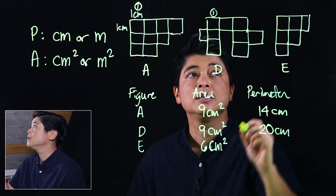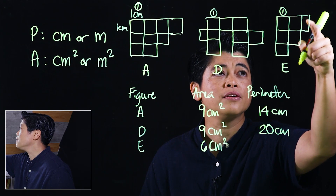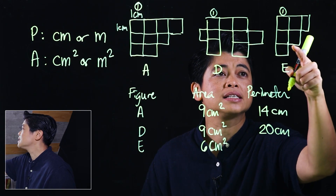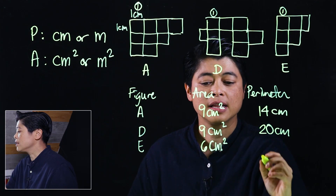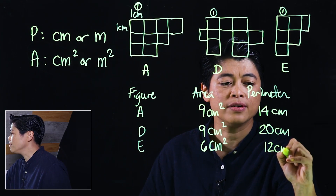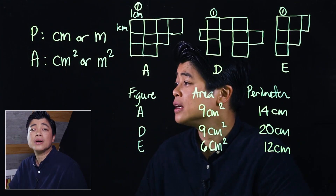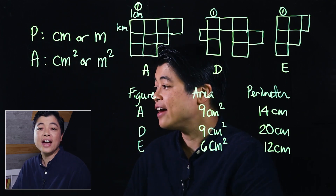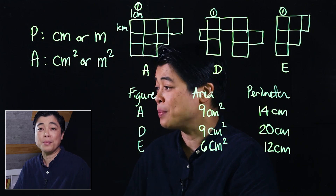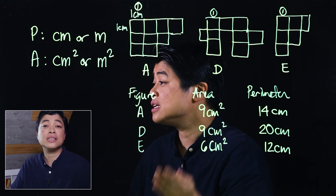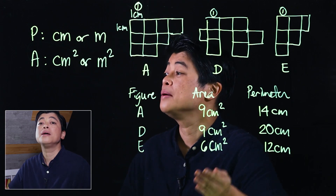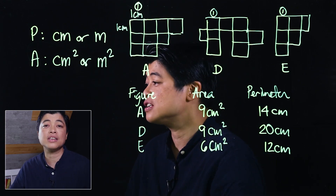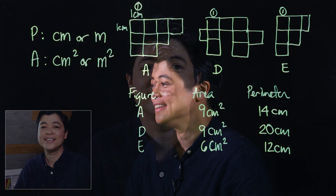For figure E, marking my starting point and counting around gives us 12 centimeters. Since I don't have all the figures, the follow-up questions after the table cannot be answered at the moment. I just needed to show you the strategy for finding the perimeter, since we already know the strategy for area. That concludes Lesson 3 of Chapter 16 — see you in the next lesson.